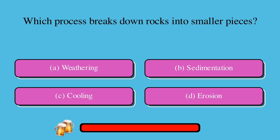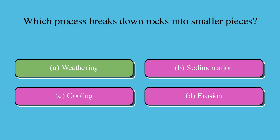Which process breaks down rocks into smaller pieces? A. Weathering, or B. Sedimentation, or C. Cooling, or D. Erosion? The correct answer is A. Weathering.